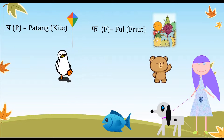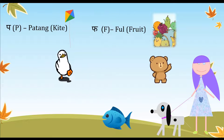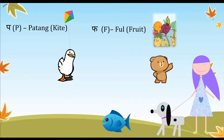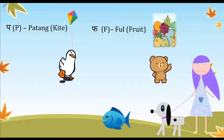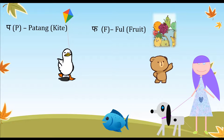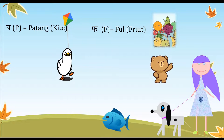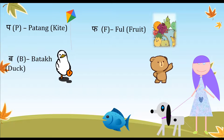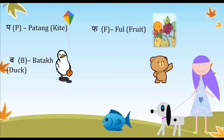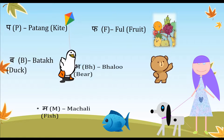We have 'pa' — 'patang' which is a kite. When I was little I used to play with kites quite a bit! Then 'fa' — 'fal' which means fruit — yummy. Next is 'ba' — 'battak' which is duck.